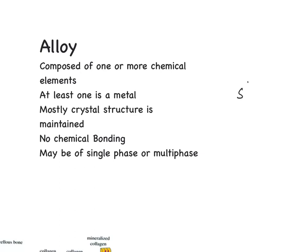For example, if you consider steel, it is an alloy of iron and carbon. Obviously in steel the amount of carbon is restricted. As we can see, iron is a metal but carbon is a non-metal, but the criteria is still satisfied.